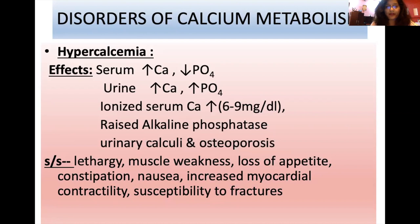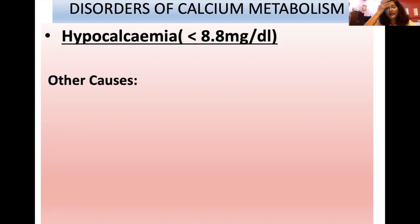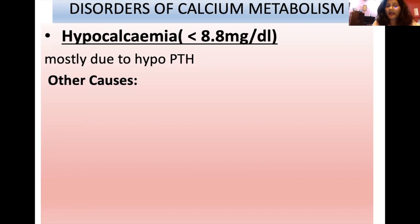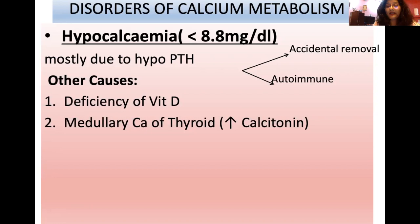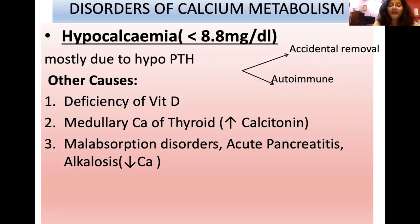Hypocalcemia is when blood calcium is lower than 8.8 mg/dL. The most frequent cause is hypoparathyroidism — either accidental or autoimmune destruction of the parathyroid gland. Other causes include vitamin D deficiency (hypovitaminosis D) due to malabsorption, and medullary carcinoma of the thyroid, which increases calcitonin levels leading to hypocalcemia.